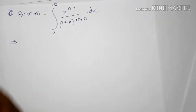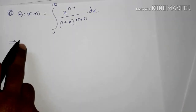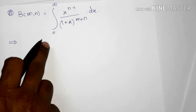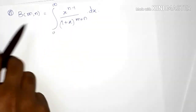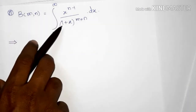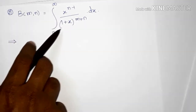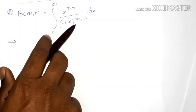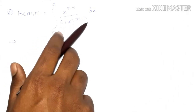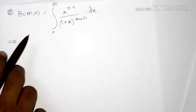Now we will see the second property: beta(m,n) is equal to the integral from 0 to infinity of x raised to n minus 1 into 1 divided by 1 plus x raised to m plus n, into dx.